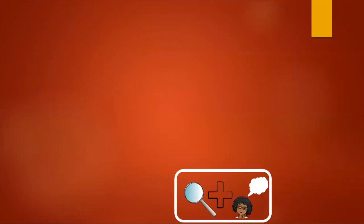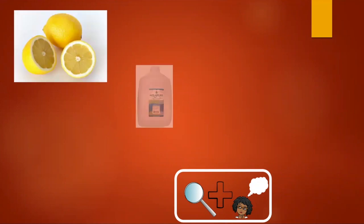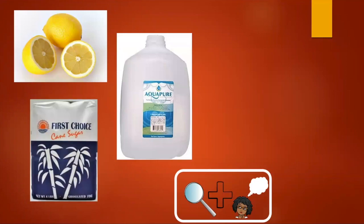Let's try one. I want you to look at these pictures, boys and girls, and I want you to look at the clues as well as think about what you already know and make a guess on what's going to happen or what these pictures are all about. We have some lemon, a bottle of water, and some sugar. Think about the clues, boys and girls — lemons, water, sugar — and also think about what you know in your head and come up with an inference.